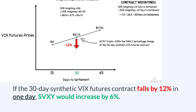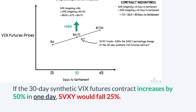More specifically, SVXY tracks one-half the inverse. For example, if this 30-day synthetic VIX Futures fell by 12% in one day, SVXY would increase by 6% on that trading day. On the other hand, if the 30-day synthetic VIX Futures contract increases by 50% in one day, SVXY would fall by 25%.